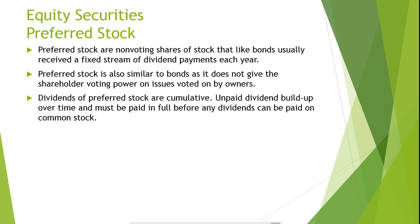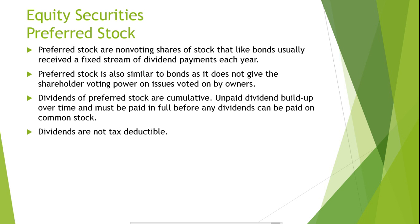Dividends of preferred stocks are cumulative. Unpaid dividends build up over time and must be paid in full before any dividends can be paid to common stockholders. This differs from bonds and other debt instruments because firms are contractually obligated to make timely interest payments. If the firm fails to make timely interest payments on debt instruments, the firm risks bankruptcy.